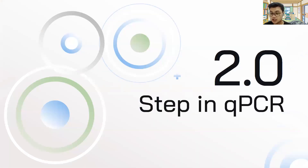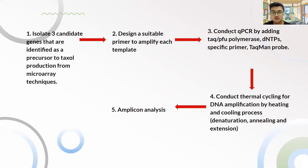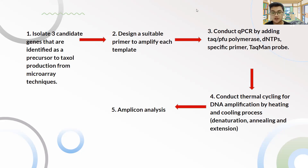For the steps involved in qPCR: first, we isolate three candidate genes identified as precursors to taxol production from the microarray results. We then design suitable primers to amplify each template. We conduct qPCR by adding Taq or Pfu polymerase, dNTPs, specific primers, and a labeled probe. We perform thermal cycling — denaturation, annealing, and extension — and then conduct amplification analysis to quantify the product.